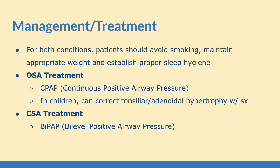In regards to management and treatment, we want to make sure for both conditions we stop smoking, maintain appropriate weight, and establish proper sleep hygiene. For OSA, we want to give CPAP — continuous positive airway pressure. In children who have OSA, we can actually pursue surgery by correcting their tonsillar or adenoidal hypertrophy, which should help with their symptoms. For CSA, we want to use BiPAP — bi-level positive airway pressure. Make sure you remember the difference in treatment for each condition.